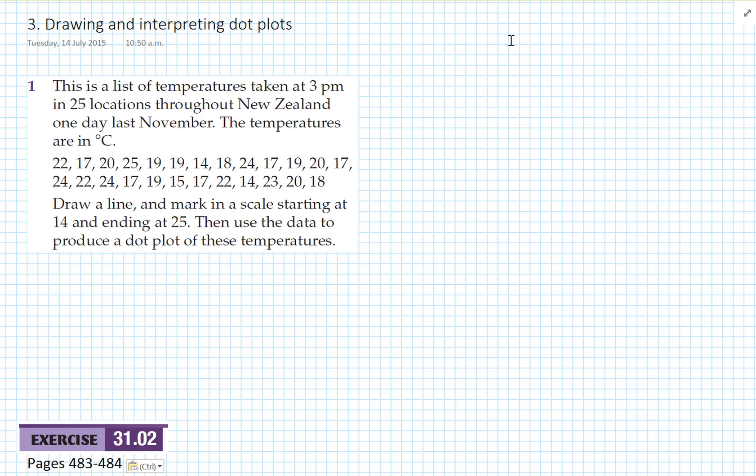This is asking us to draw a dot plot. It says draw a line and mark in a scale starting at 14 and ending at 25, then use the data to produce a dot plot of these temperatures. I think I'll go with my squares being the markers of my dots, and I'll just draw a scale for that.